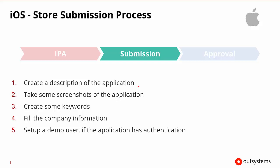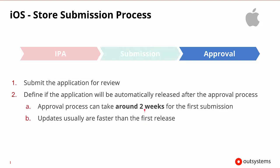Once you've uploaded it, you then need to create a description of the app, probably take some screenshots to give a graphical representation of it, create keywords, fill in your company information, and set up a demo user if the application has that type of authentication. You'll also need to submit the app for review. If the application is approved, you can set it to automatically release after approval. Typically, Apple takes around two weeks to approve the first submission, but updates are usually a little faster than the very first release.